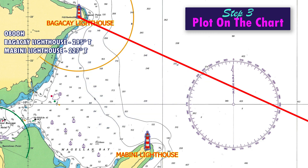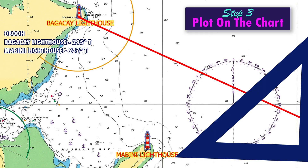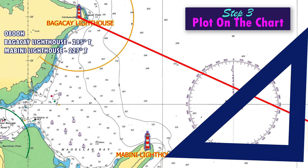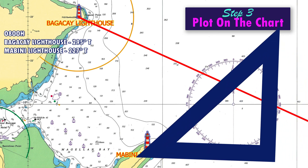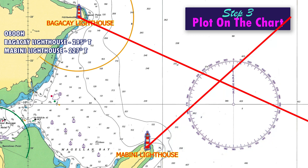Next, plot the bearing of Mabini Lighthouse. Look for 227 degrees, align the ruler, drag it to the lighthouse, then draw another line.